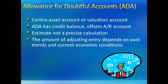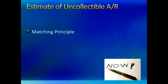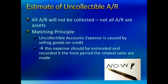In other words, we use what we know from our history as well as what we know about the current economic conditions to make our estimate. The estimate of uncollectable Accounts Receivable fulfills two accounting concepts. Not all Accounts Receivable will be collected, therefore not all Accounts Receivable are assets. By reporting all Accounts Receivable as an asset, we would be overstating our assets, since assets are probable future economic benefits and it's not probable that we'll collect all Accounts Receivable.